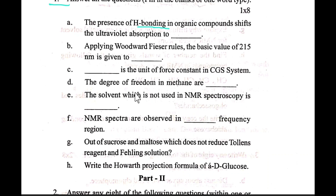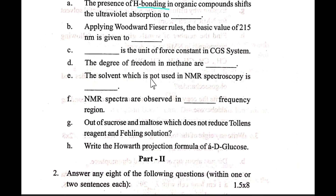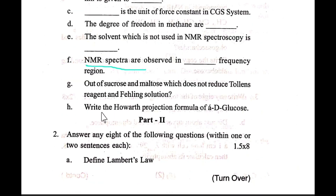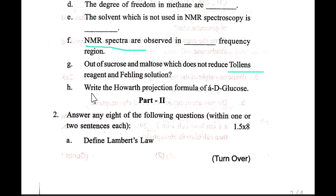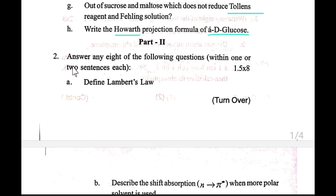The degree of freedom in methane. Which solvent is used and which is not used in NMR spectroscopy? NMR spectra are observed in which frequency region. Out of sucrose and maltose, which does not reduce Tollens' reagent and Fehling's solution? Write the Haworth projection formula of D-glucose.